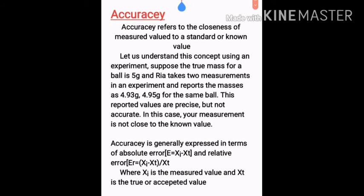Accuracy refers to the closeness of a measured value to a standard or known (true) value. The closer a measured value is to the known value, the more accurate it is. Let us understand this concept using an experiment. Suppose the true mass of a ball is 5 grams.